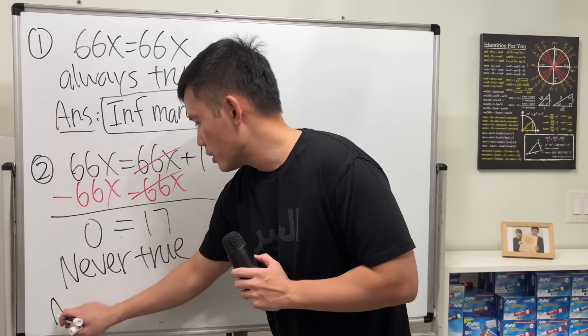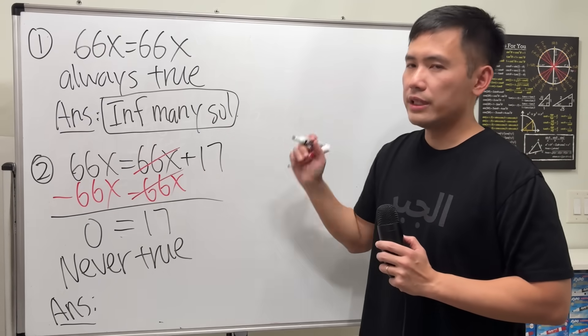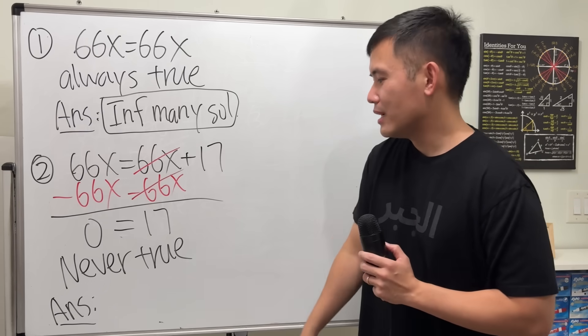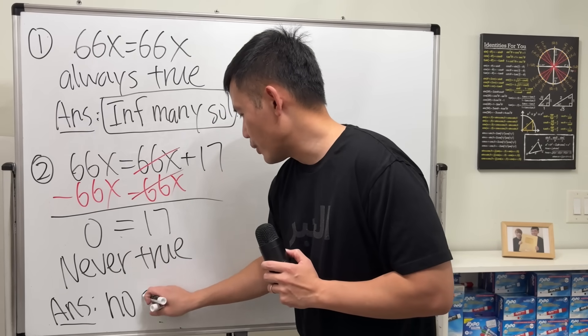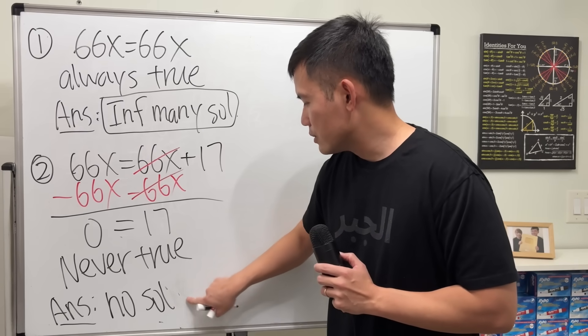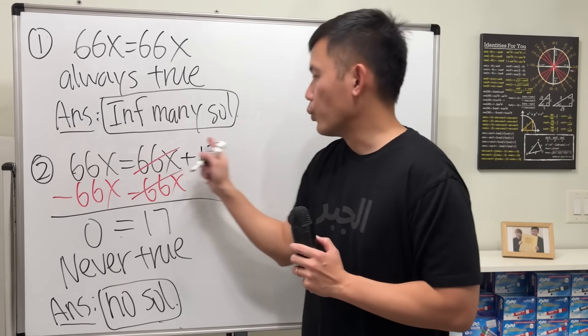This is never true. So how many solutions does this equation have? No solutions. You can say 0 solutions, but let's just say no solutions. No numbers will make this equation work.